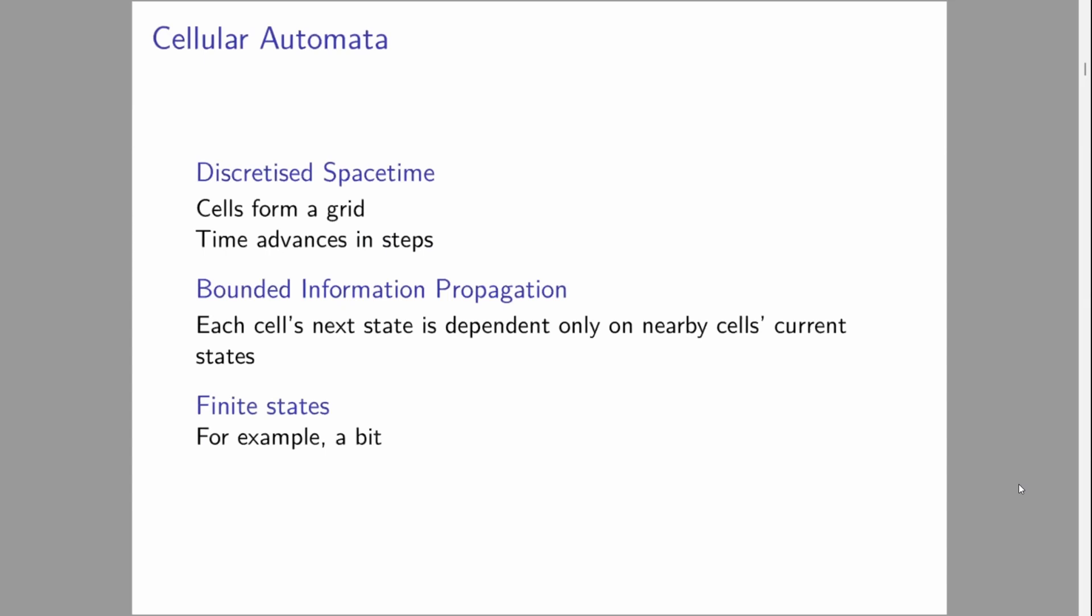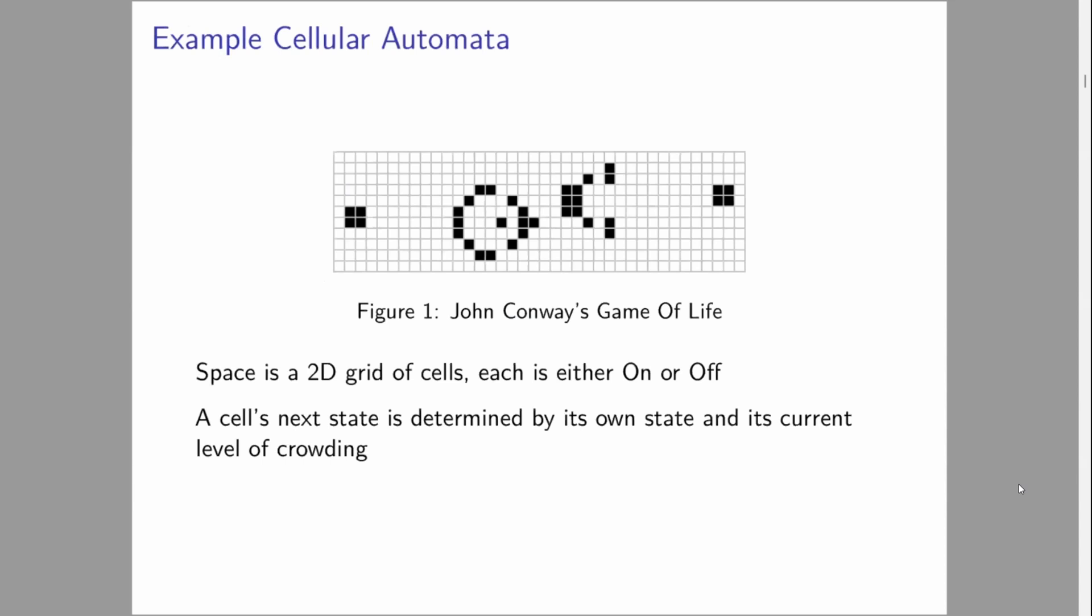We're going to start with classical cellular automata. This is a description of what one needs to be a cellular automata. We have discretized space-time, usually cells forming a grid in however many dimensions you want, and time advances in steps. We have bounded information propagation, where each cell's next state depends only on nearby cells' current states. These cells can only take on a finite number of values, for example, a bit on-off true-false. The best known example is John Conway's Game of Life.